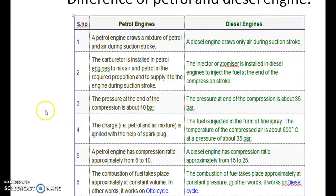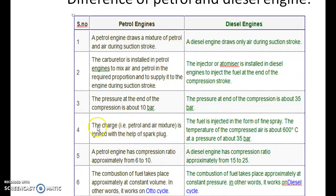Difference between petrol and diesel engine: a petrol engine draws a mixture of petrol and air during the suction stroke, while a diesel engine draws only air during the suction stroke. A carburetor is installed in a petrol engine; an injector or atomizer is installed in a diesel engine. The compression end pressure is about 10 bar for petrol and 35 bar for diesel. In a petrol engine the charge is ignited with a spark plug; in a diesel engine the fuel is injected as a fine spray.